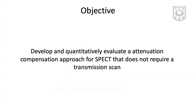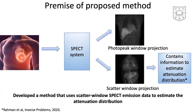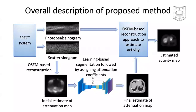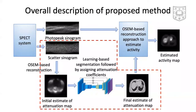Given the challenges with transmission-based attenuation compensation methods, in this presentation we propose, develop, and quantitatively evaluate an attenuation compensation approach for SPECT that does not require a transmission scan. In SPECT, photopeak window and scatter window projections can be obtained from the emission data. The scatter window projection is often discarded. However, we have shown that scattered photons in SPECT contain information to estimate the attenuation distribution. Expanding on this observation, we proposed a physics and learning-based 3D reconstruction method that uses the SPECT emission data in the photopeak and scatter windows to perform transmission-less attenuation compensation. The key idea is to use the scatter projections to estimate the attenuation map.